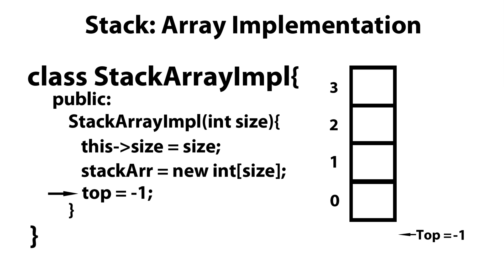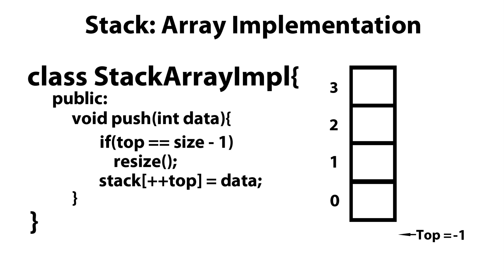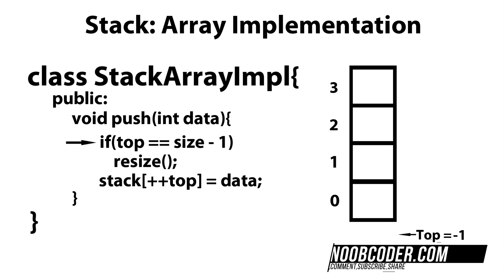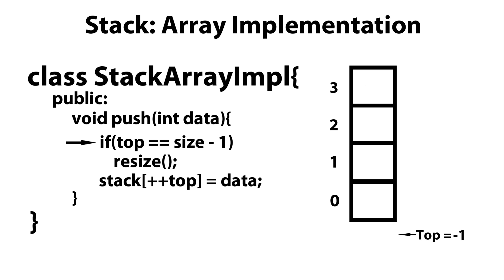To get started, we're going to have our push method. The push method is not going to return anything, so it's void, and we're going to be passing in the data we want to push on top of the stack. The very first thing we need to do is check to see if the stack is full. One way to do that is to see if top is equal to size minus one — remember, the last index of the array is always size minus one, which gives us index three. So if top is equal to index three, we have no more room, so we call our resize method. After that, we just push on top of the stack.